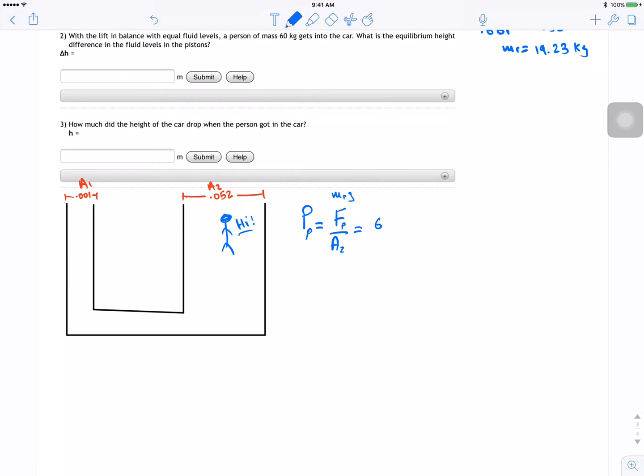Which is equal to, my guy was 60 kilos, 9.81 divided by A2. A2 is 0.052, and for this guy I got 11319 Pascal due to the person.